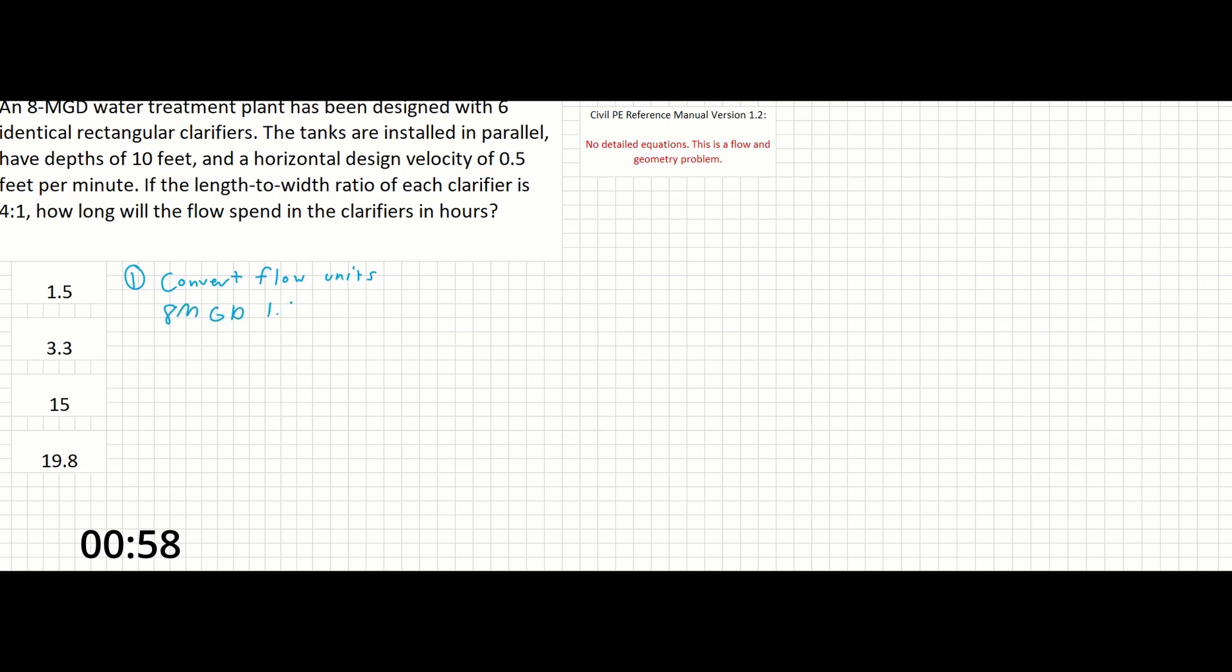We can convert by 1.547 CFS to MGD, which is a unit conversion you may find in the front of the reference manual or have it memorized. From there, we can multiply by 60 seconds in 1 minute.